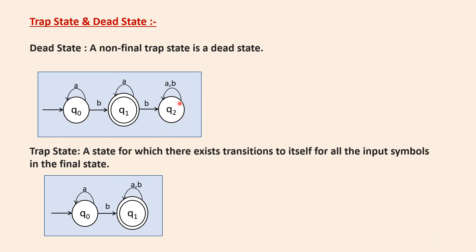If the same happens to a non-final state, Q2 is a non-final state where all the input symbols A and B are looped to itself. There is no transition happening from Q2 to any other state. Because Q2 is a non-final state, we call this to be a dead state. If the string has more than one B, it goes to this non-final state, so we call this the dead state.